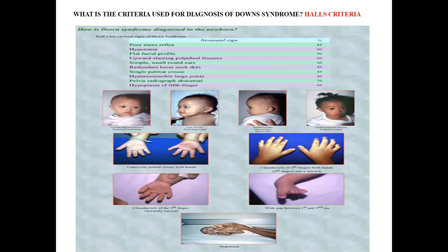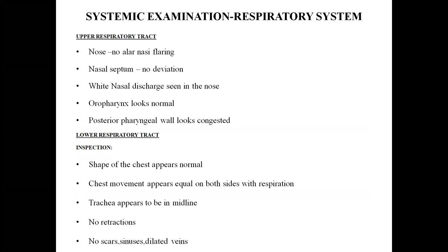Other syndromes with mongoloid slant include Prader-Willi and ectodermal dysplasia. Syndromes with anti-mongoloid slant: most common is Treacher Collins, also Noonan syndrome and Crouzon syndrome. Conditions with short neck like Down syndrome include hypothyroidism, Klippel-Feil deformity, Turner syndrome, and Noonan syndrome. Hall's criteria to diagnose Down syndrome in a newborn: 10 features — poor Moro reflex, hypotonia, flat facial profile, upward slanting palpebral fissures, small rounded ears, redundant loose neck skin, single palmar crease, hyperextensible large joints, abnormal pelvic radiograph, hypoplasia of the fifth finger.